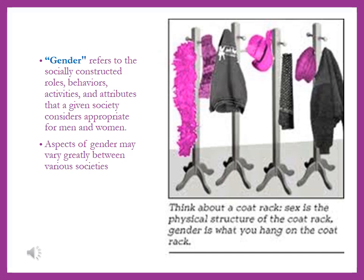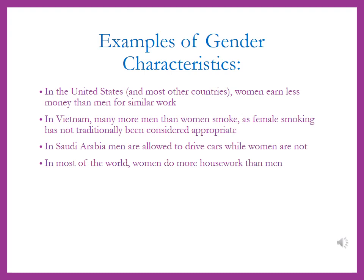It brings up the question of how many genders there are and how many sexes there are, because you might not necessarily have the same gender as sex. Some examples of gender characteristics might be that in the United States and in most other countries, women earn less money than men do for similar work — it's called the wage gap. In Vietnam, many more men than women smoke, as female smoking has not traditionally been considered appropriate, and in fact female smoking wasn't considered appropriate in the United States until after the 1920s. In Saudi Arabia, men are allowed to drive cars and women can't, and in most of the world, women do more housework than men.